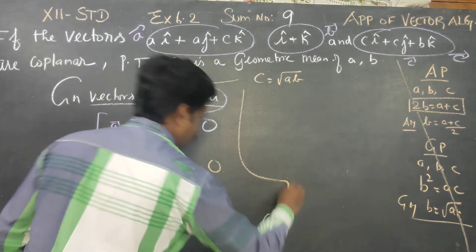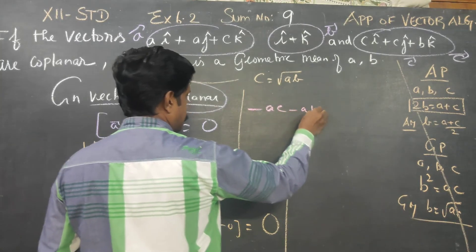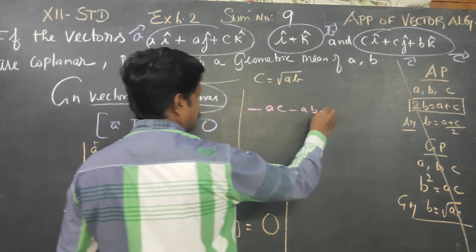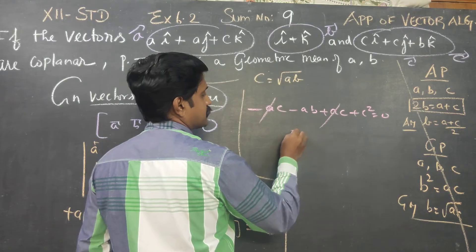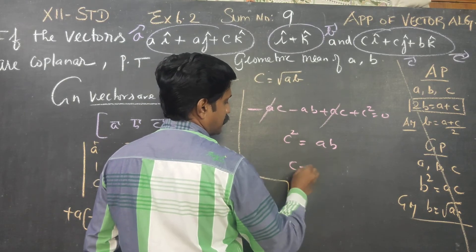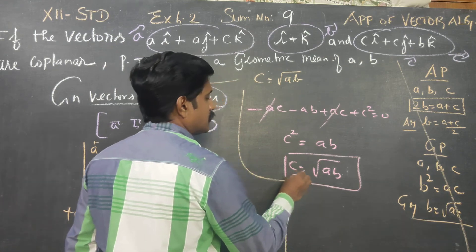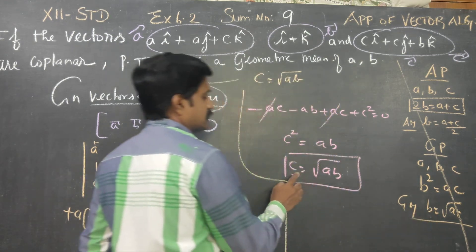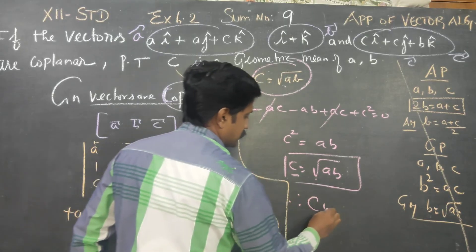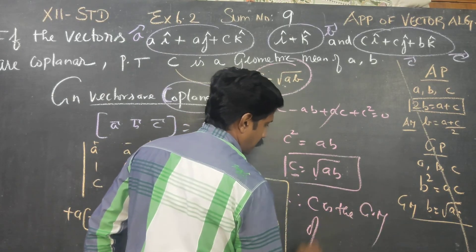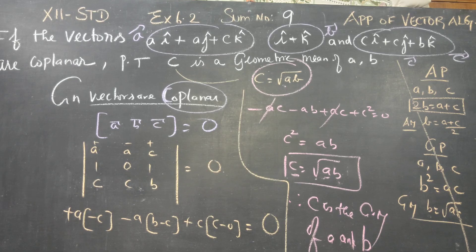Multiplying out: minus AC, minus AB, plus AC plus C squared equals 0. The AC terms cancel, leaving C squared equals AB. Therefore C equals the square root of A times B. That is the geometric mean. C is the geometric mean of A and B.